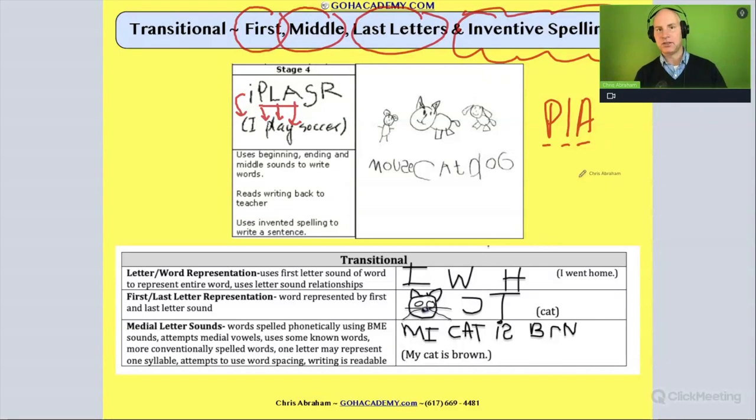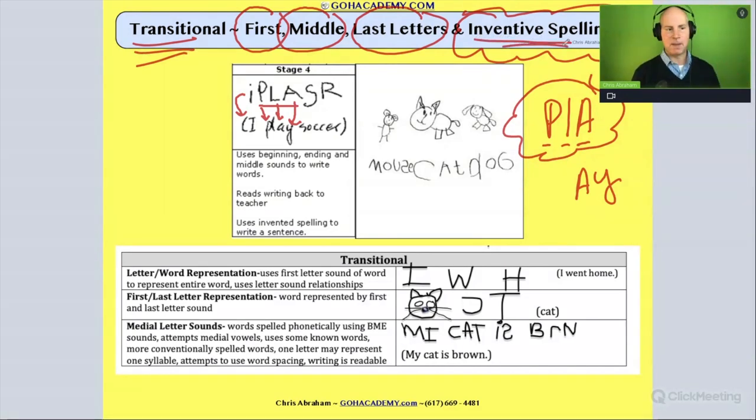It's just not the right phonics pattern. But guess what? That's not the point. The point of inventive spelling is to start to use the alphabetical principle to match up letters with sounds and also take sounds and match them up with their predictable letter. So this is a great job at that transitional writing stage. And it's an example of inventive spelling.